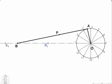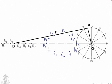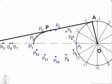Obtain other points in similar manner. Then, draw a smooth curve through these points. This curve is the locus of point P.